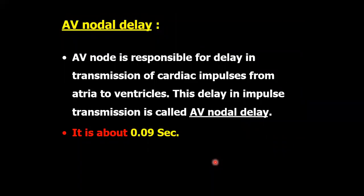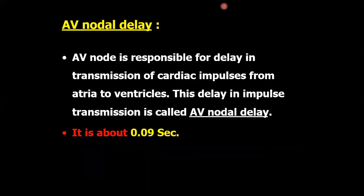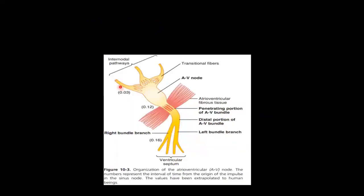AV nodal delay: the AV nodal delay is responsible for the delay in transmission of cardiac impulses from the atria to the ventricles; this delay in impulse transmission is called AV nodal delay, and it is about 0.09 seconds. So from the SA node, the impulse goes to the AV node through internodal pathways in 0.03 seconds, plus AV nodal delay of 0.09 seconds, making the total delay from SA node to AV node 0.12 seconds, and the ultimate delay to the ventricular septum is 0.16 seconds.